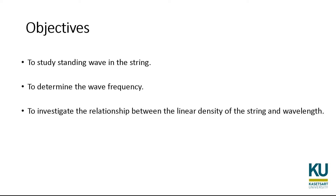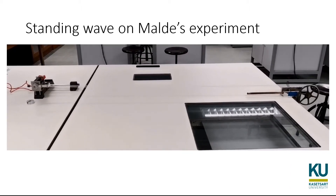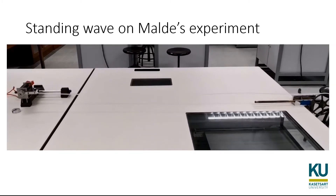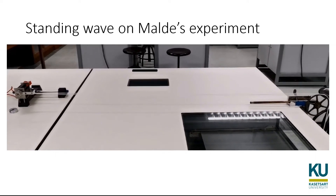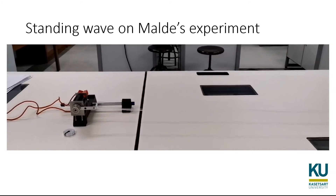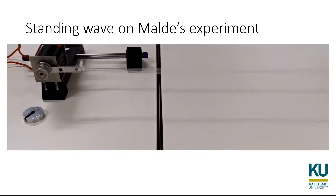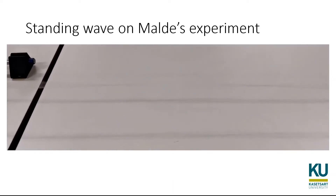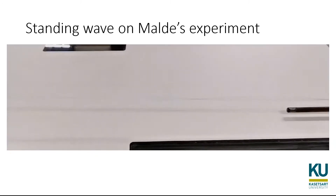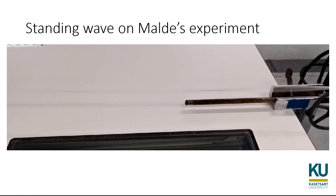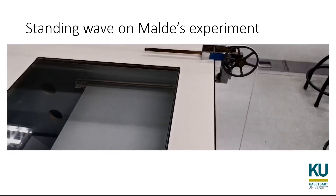The third objective is to investigate the relationship between the linear density of the string and wavelength. If you change the type of string and change the linear density, you can compare the effect on the frequencies and the wavelength. This is the overall setup of the Melde's standing wave experiment we are going to perform. You need to set up the experiment and create the standing wave by adjusting the tension, loading weight at the end of the string, and observing the loops that form.